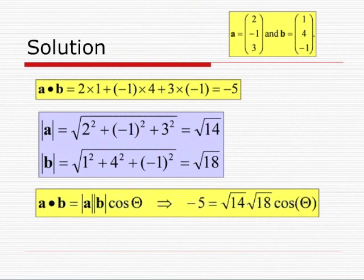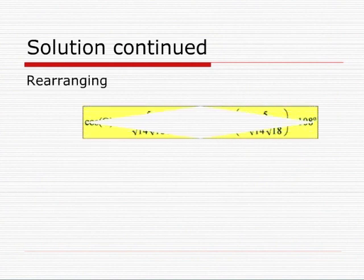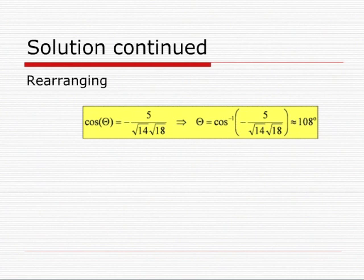Then, if we plug these values into the formula A·B = |A| × |B| × cos(theta), we get -5 = √14 × √18 × cos(theta). If we rearrange this formula, we get cos(theta) = -5 / (√14 × √18), which implies that theta = arccos(-5 / (√14 × √18)), which is approximately 108 degrees.